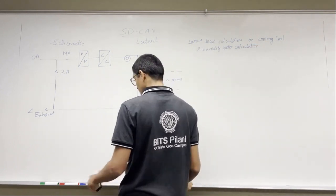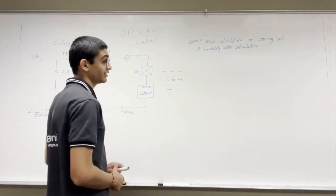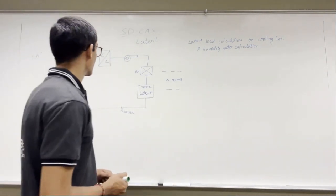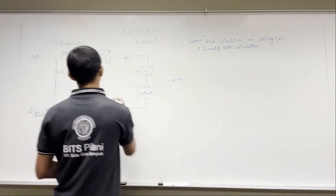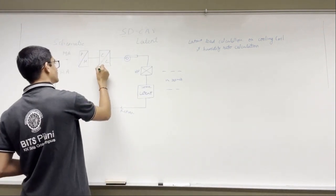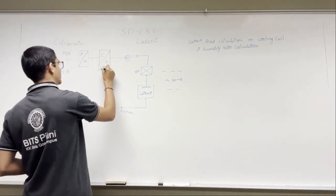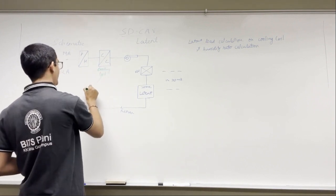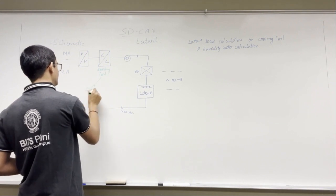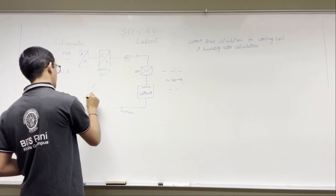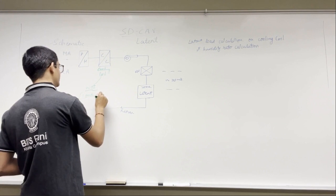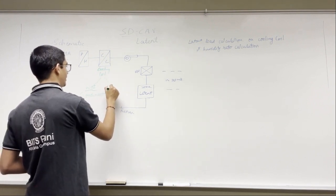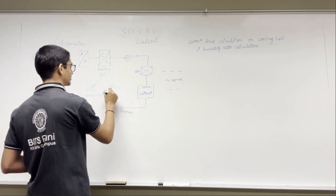Again we will only be using the energy balance and that's how we will be able to calculate, but there are two conditions possible since this is a cooling coil. In a cooling coil there are two possibilities: the cooling coil is wet, meaning there is condensation happening, and the other is the cooling coil is dry.